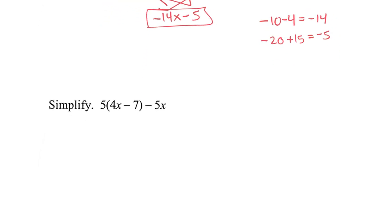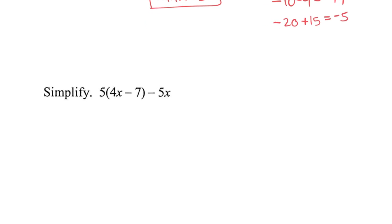All right, we're on to our last question here. This one should be simpler. We have to distribute the 5 to each item inside the parentheses. 5 times 4 is 20x, and we got the minus. 5 times 7 is 35. Then we write down the minus 5x. Then we can combine our like terms, those variable terms. 20 minus 5 is 15x. And then the minus 35, what do you do with that? Nothing. Minus 35.